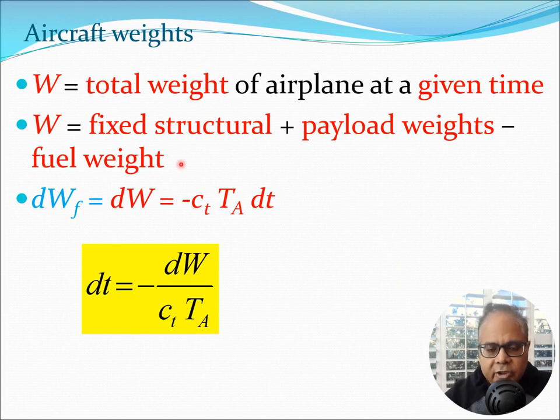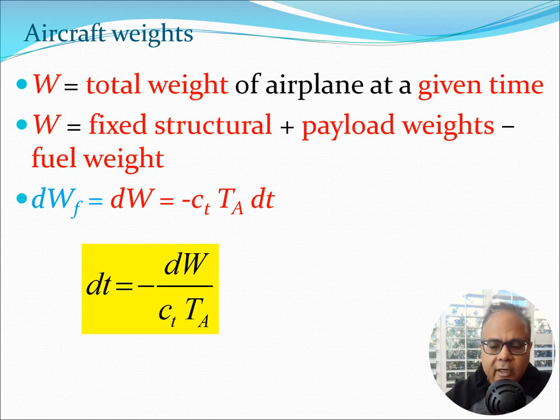Now one more nomenclature we had was the total weight of the airplane at a given time. So essentially dWF is equal to dW and that was minus CT TA dt. When we say dW is same as dWF we are making the point that the payload is fixed, the weight is fixed and so on. Hopefully no payload is being thrown or jettisoned during the flight. In that case you would need to consider that in these equations. So let's get back to this equation. Now we have a good understanding of the weights at the beginning and end of the journey.